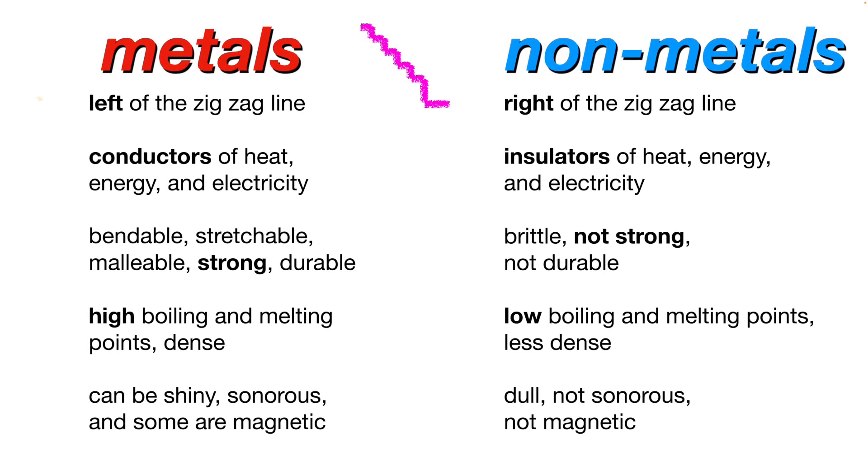Metals and non-metals. Metals are left of the zigzag line, and non-metals are right of the zigzag line. Metals are conductors of heat, energy, and electricity, and non-metals are insulators of heat, energy, and electricity. Metals are bendable, stretchable, malleable, strong, and durable.